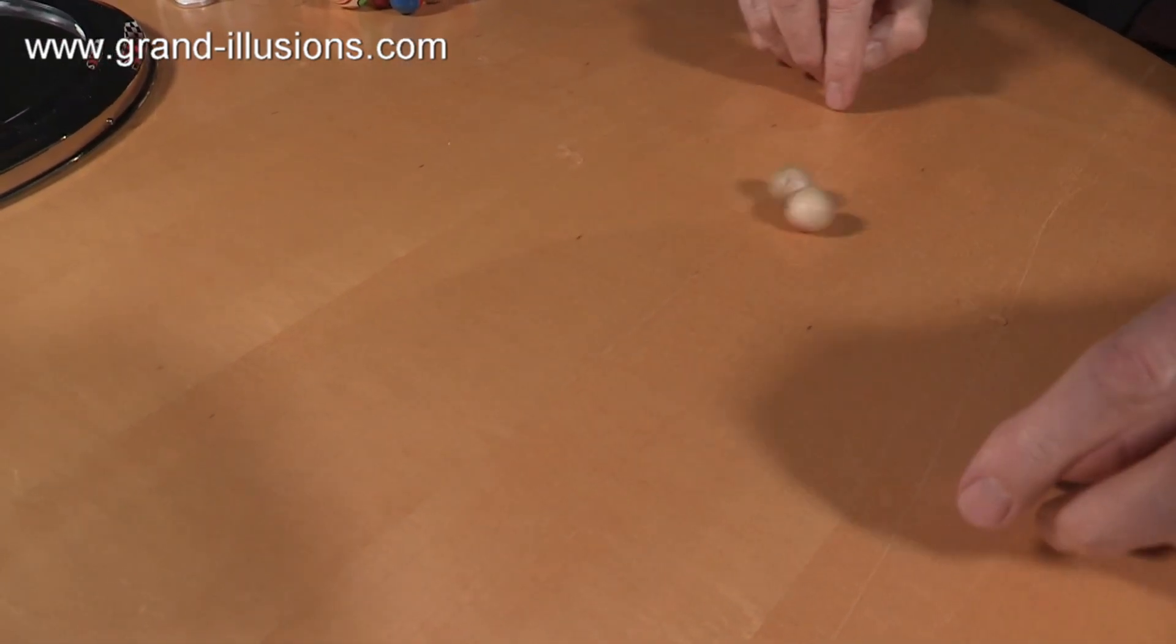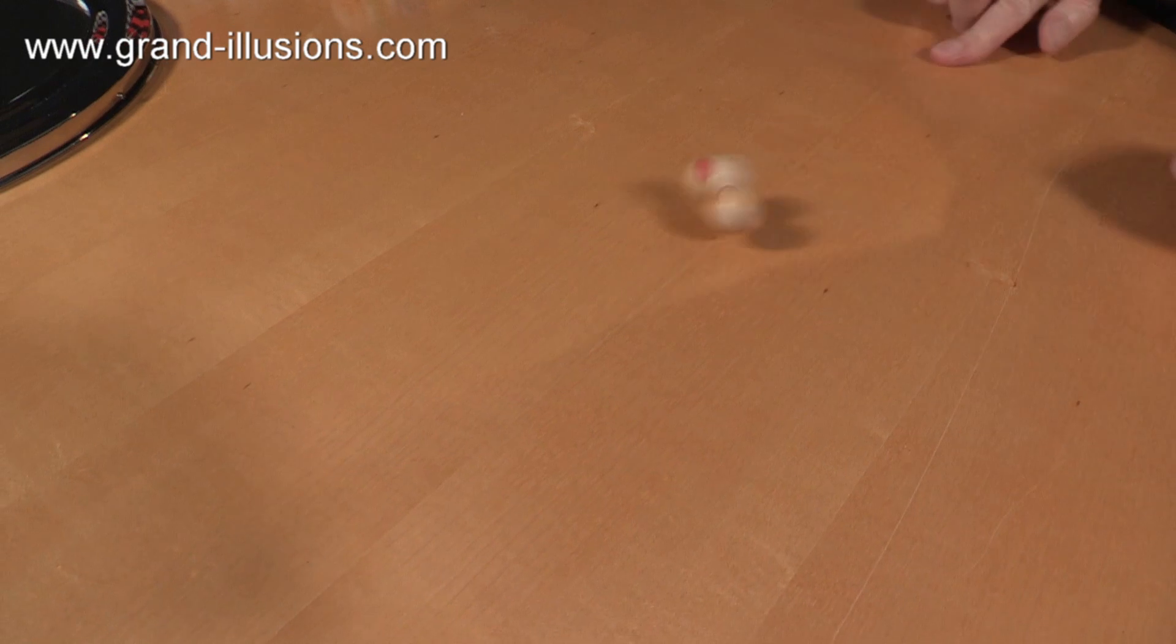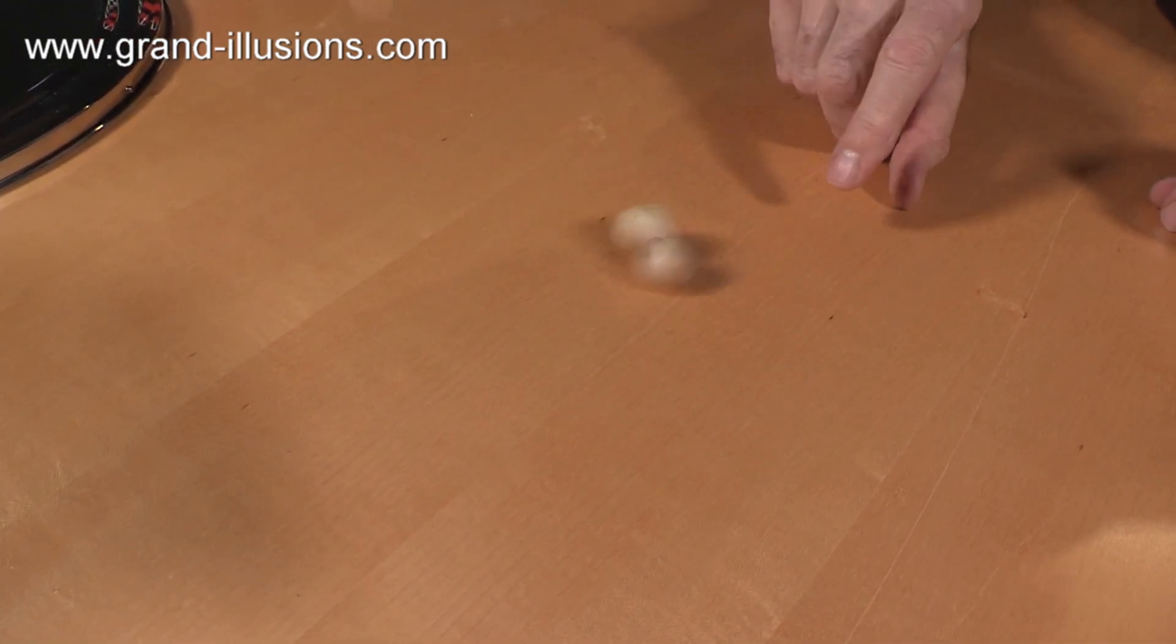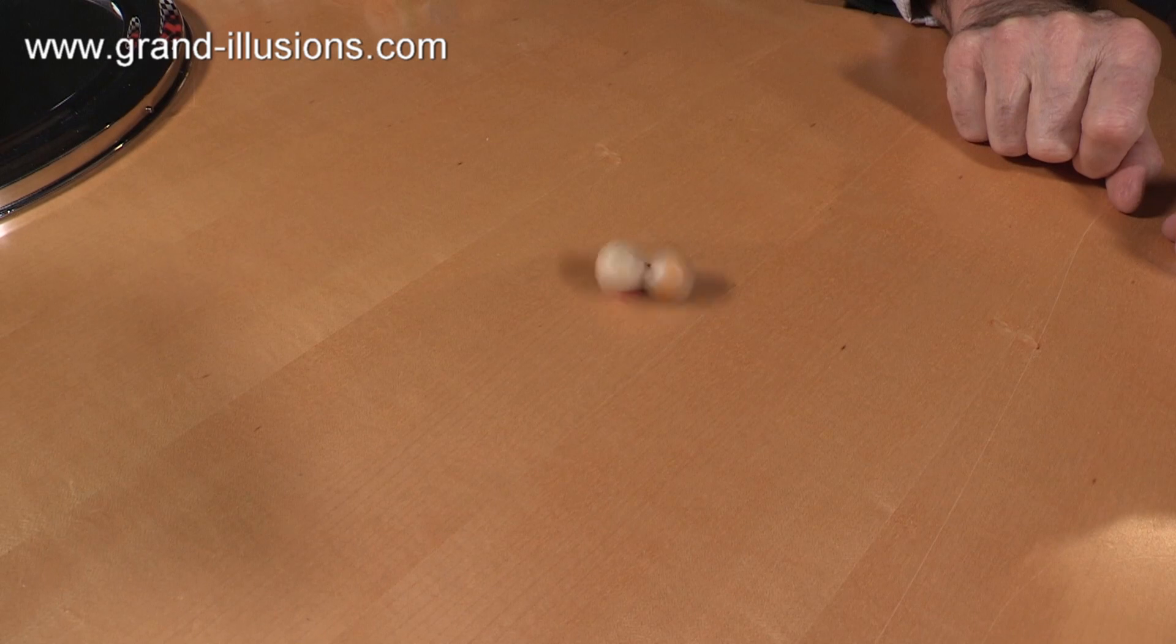And when you spin them, you don't spin them like that, you snap them with your finger like that. And when that happens, can you see the little red spot slowly processing round? What's going on here?